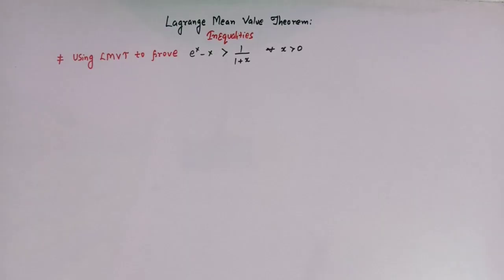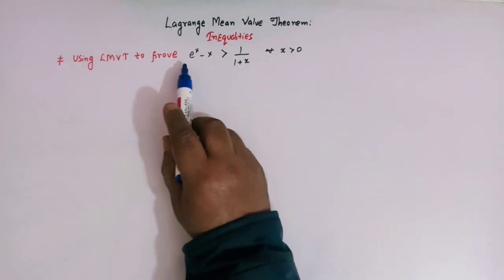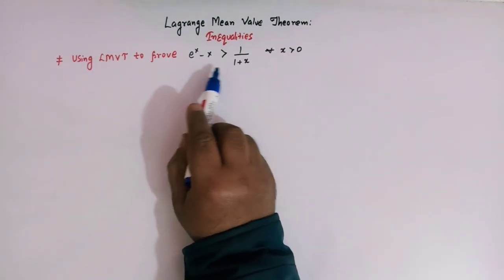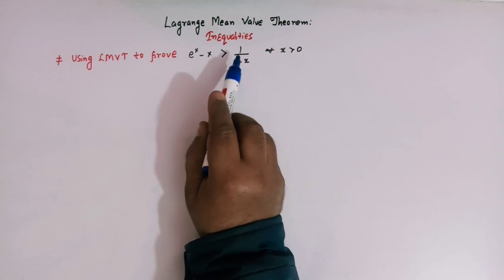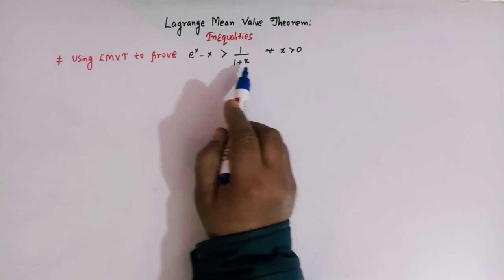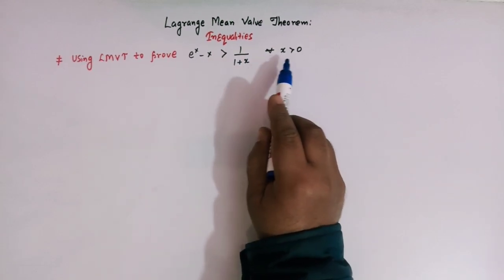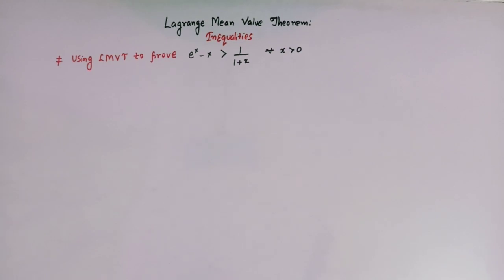Hello viewers. In today's class we are going to discuss one important application of Lagrange mean value theorem. Here I will apply Lagrange mean value theorem to prove this important inequality which says that e raised to x minus x is greater than 1 over 1 plus x, for all x greater than 0.